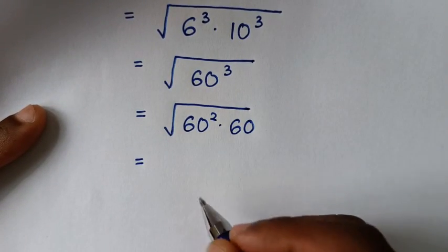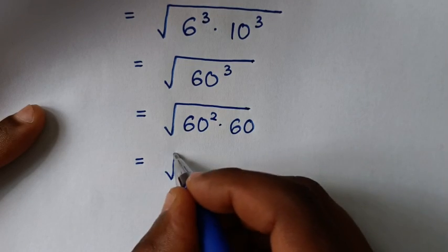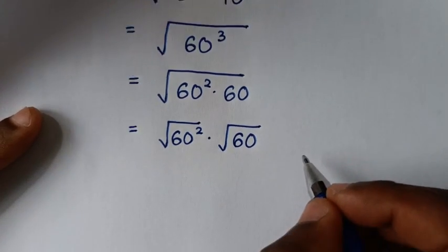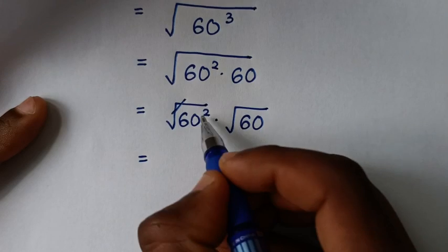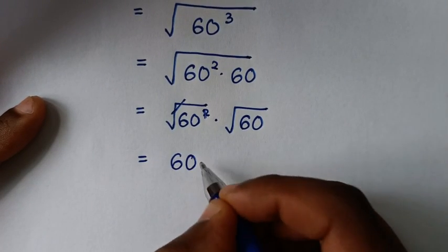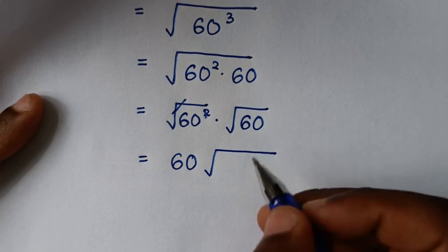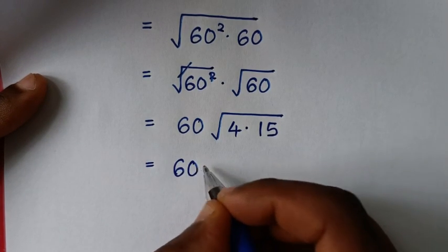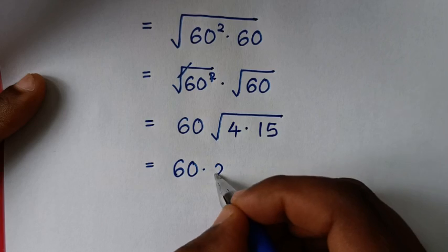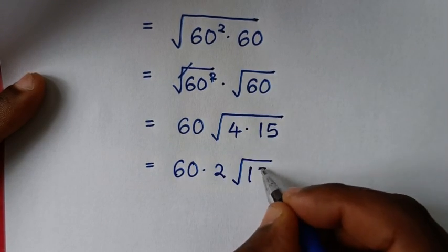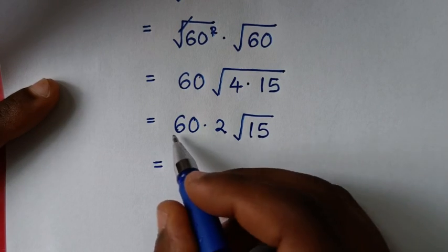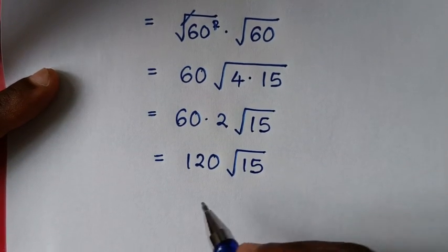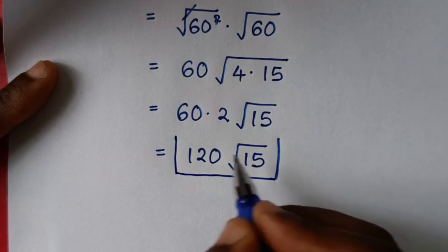Then it will be equal to the square root of 60 to the power 3, which is the same as 60 squared times 60. Separating, it becomes the square root of 60 squared times the square root of 60. The square root of 60 squared is 60, and 60 times the square root of 4 times the square root of 15 gives 60 times 2 times the square root of 15. Therefore 120 square root of 15 is our final answer.